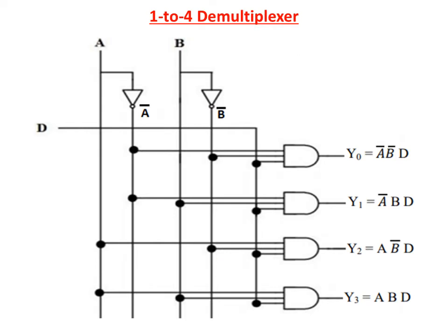This is the logic diagram for 1 to 4 D-multiplexor. The single data input D is here, and the selection inputs are A, B. At this position we will get A bar and B bar. The outputs are represented by AND gates: Y0 is equal to A bar B bar D, Y1 is equal to A bar B D, Y2 is equal to A B bar D, and Y3 is equal to A B D. So to implement the D-multiplexor, we require AND gates and inverters.